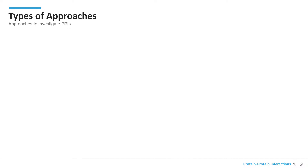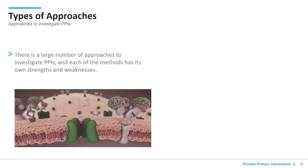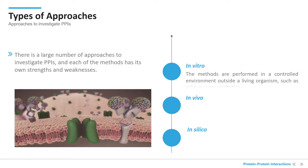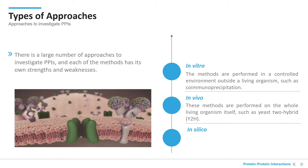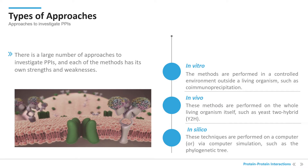There is a large number of approaches to investigate protein-protein interactions, and each of the methods has its own strengths and weaknesses. These protein-protein interaction detection methods can be classified into three groups, including in vitro, in vivo, and in silico methods. The in vitro methods are performed in a controlled environment outside a living organism, such as co-immunoprecipitation. In vivo methods are performed on the whole living organism itself, such as yeast-2 hybrid. The in silico methods are performed on a computer or via computer simulation, such as the phylogenetic tree.